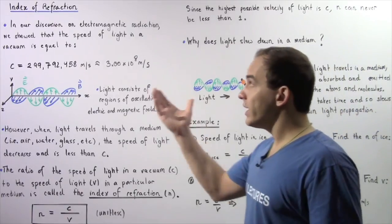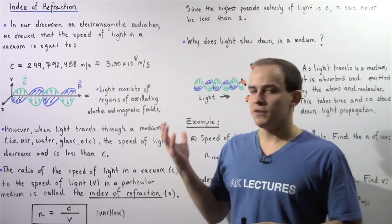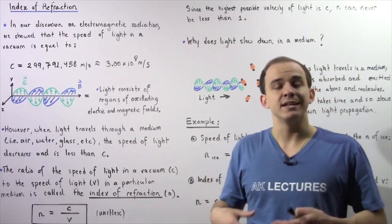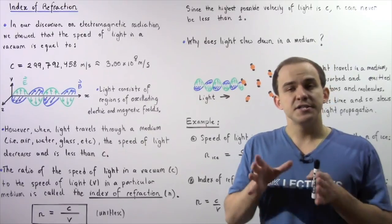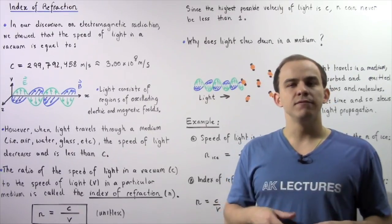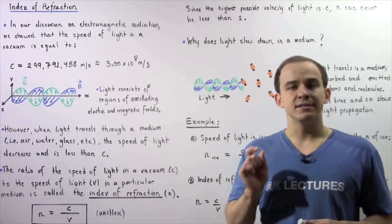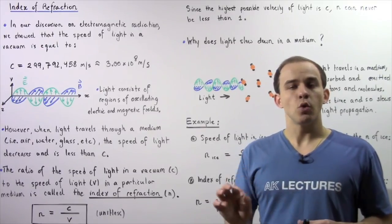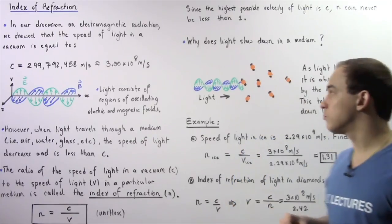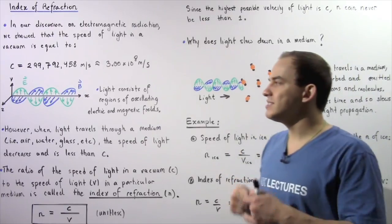So what exactly is the index of refraction? It allows us to relate the speed of light inside a vacuum to the speed of light inside a medium. The speed of light inside a medium is always slower than in a vacuum because of the presence of molecules and atoms, which absorb and re-emit that light.